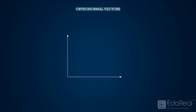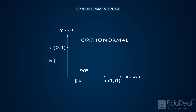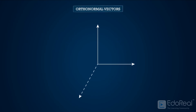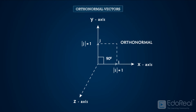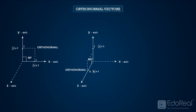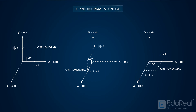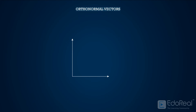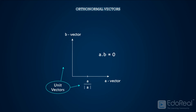Orthonormal vectors. If two unit vectors A and B are perpendicular to each other, then they are called orthonormal vectors. The magnitude of each vector is equal to one, and the dot product of the two unit vectors is zero. For example, I and J are unit vectors along the X and Y axis, so these are orthonormal vectors. In the same way, J and K, and K and I, are orthonormal pairs of vectors. Note that if A and B are two vectors such that their dot product is zero, then the unit vectors A/|A| and B/|B| become orthonormal vectors.